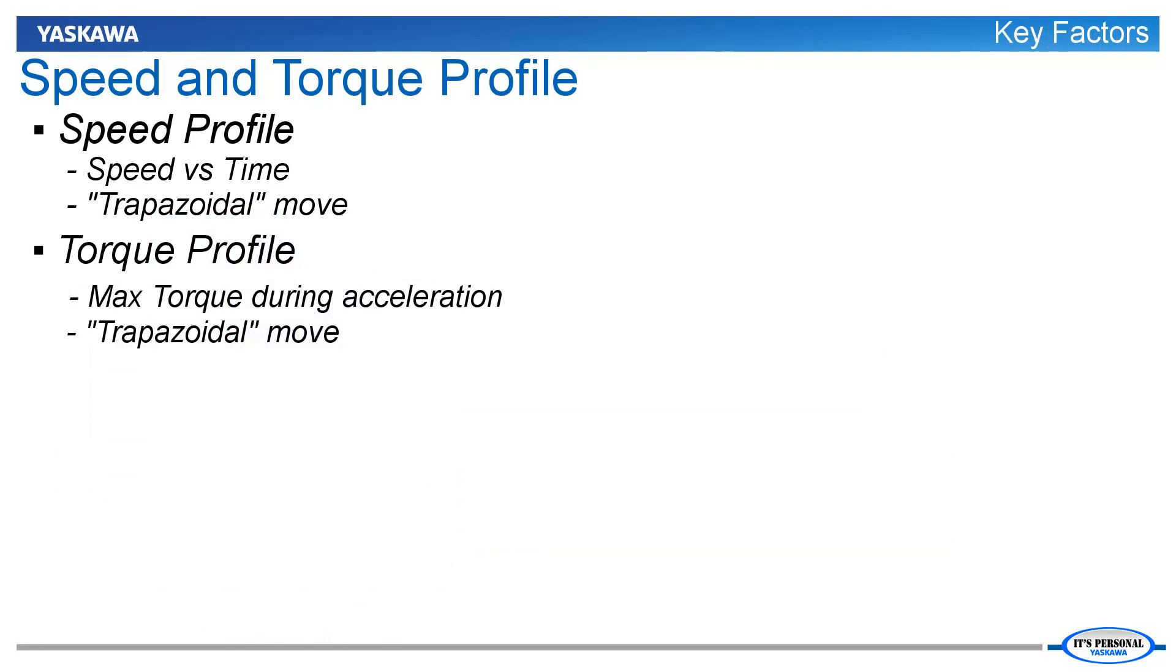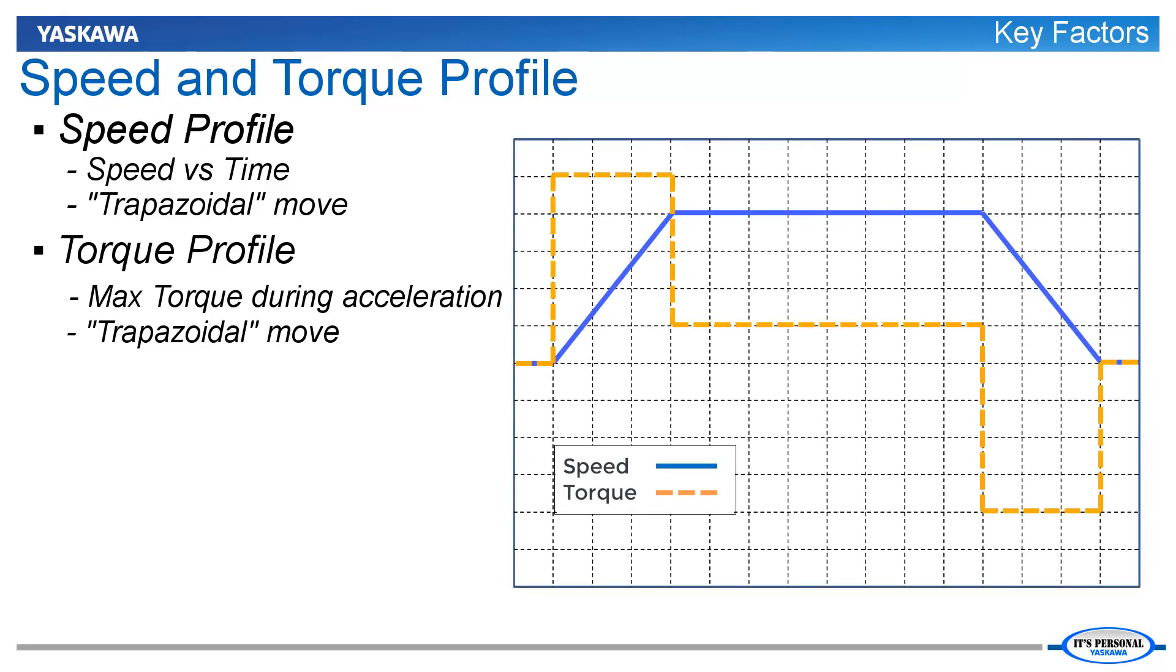While the motor's capability is described by the speed-torque curve, the application requirements are best illustrated using the speed profile and torque profile. The speed profile is a graphical representation of the motor speed versus time, and the torque profile is a graphical representation of the motor torque required for the machine to follow the speed profile. This graphic illustrates a typical speed and torque profile required to perform a positioning move for a horizontal actuator with no external forces.